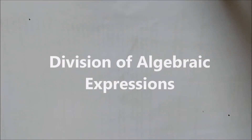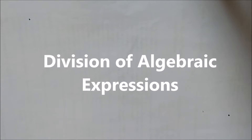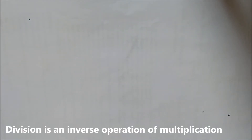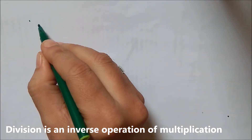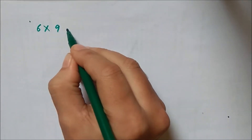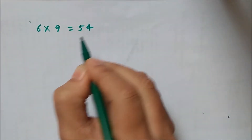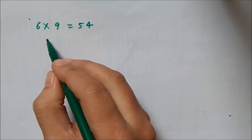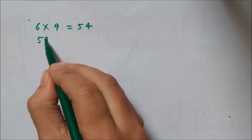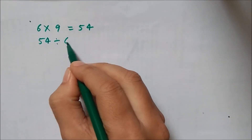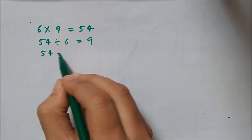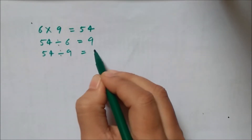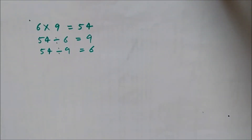In this lecture we learn how to divide different algebraic expressions. Division is the inverse operation of multiplication. For example, multiplication of 6 into 9 is equal to 54. So division means the inverse: 54 divided by 6 equals 9, or 54 divided by 9 equals 6. That is how division is the inverse operation of multiplication.